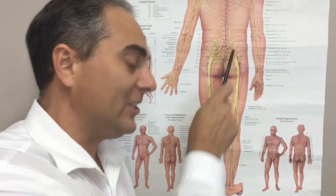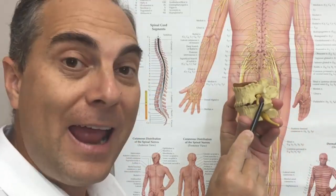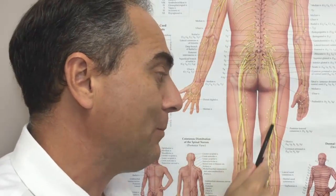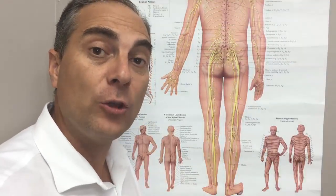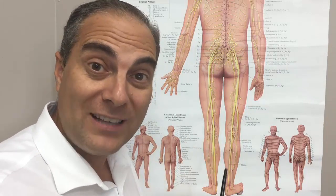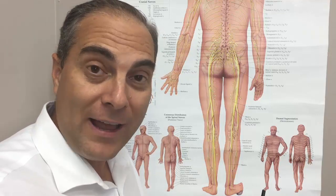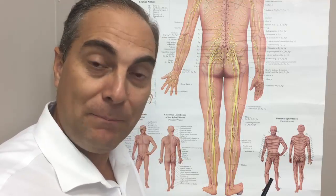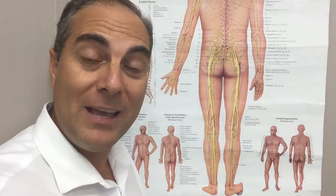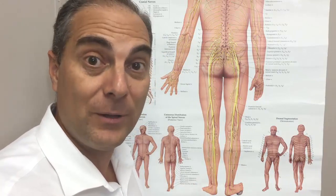So when there's a disc bulge like I showed you earlier, and it irritates the L4 or L5 nerve, it will distribute pain down the leg along those nerve fibers. Nerves, when they're sensitized, inflamed, compressed, or irritated, cause excruciating pain. On the lower end, that may be pins and needles, tingling, or a numbing sensation. But when they're really pinched, compressed, and inflamed, they can send a shooting pain down the leg. It's very debilitating.